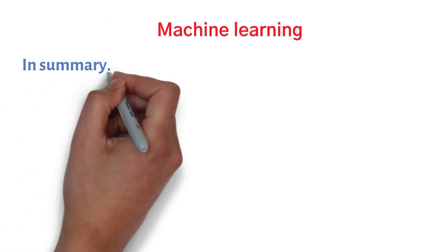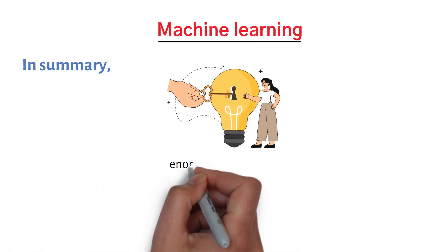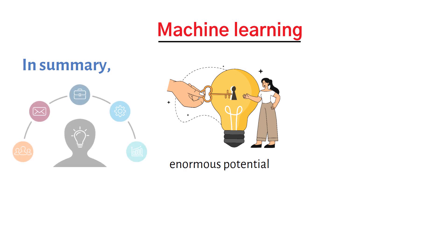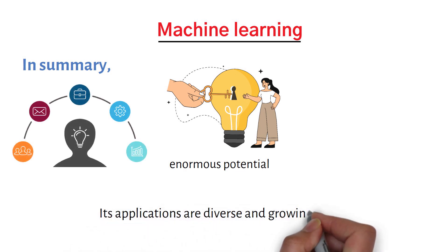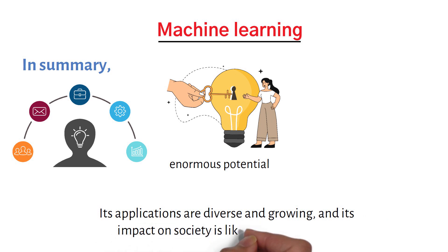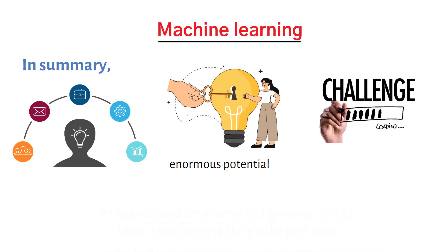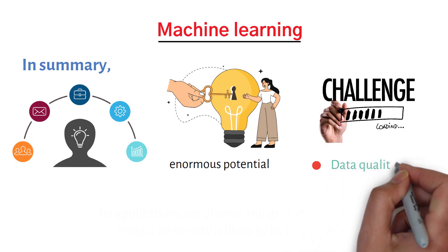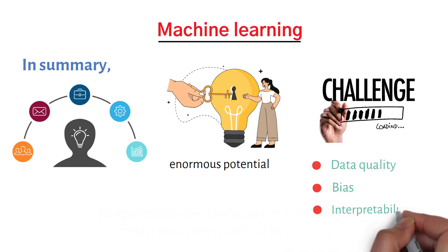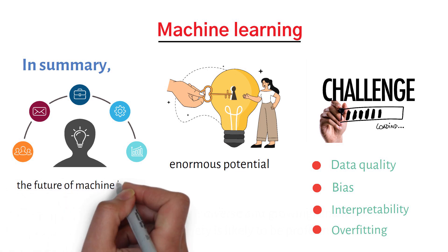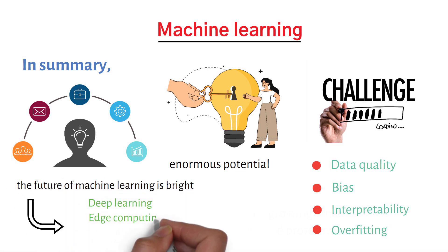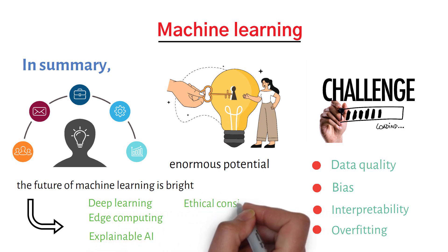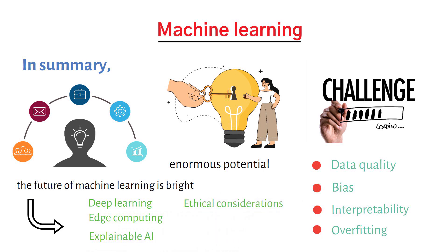In summary, machine learning is a field with enormous potential to transform many industries. Its applications are diverse and growing, and its impact on society is likely to be profound. While there are challenges such as data quality, bias, interpretability, and overfitting, the future of machine learning is bright, with trends such as deep learning, edge computing, explainable AI, and ethical considerations shaping its future.